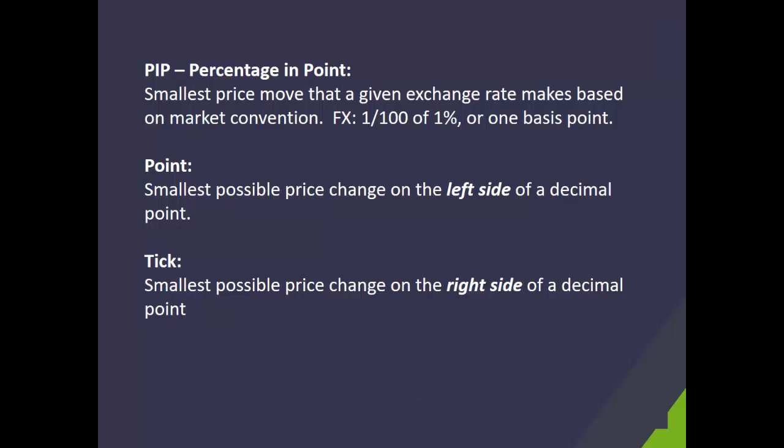You can calculate the value of that to make sure that you are in line with your risk and money management rules. The third term that flies around in that context is tick — that's the smallest possible price change on the right side of the decimal point, in contrast to the point definition. Often a tick can be in line with a PIP depending on the number of decimals a currency pair is being traded with.